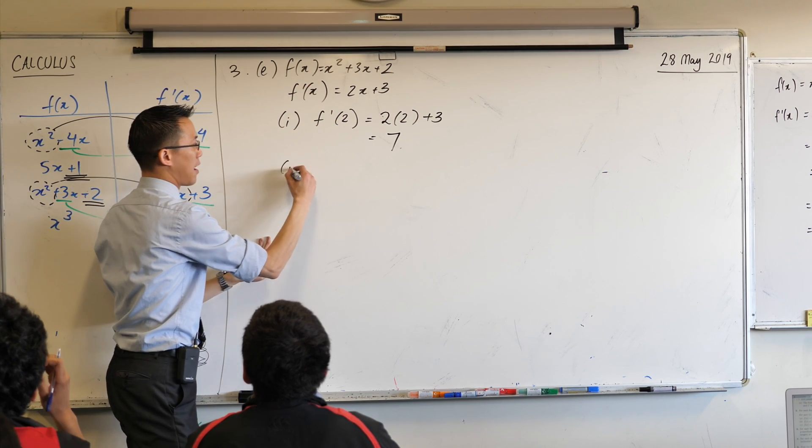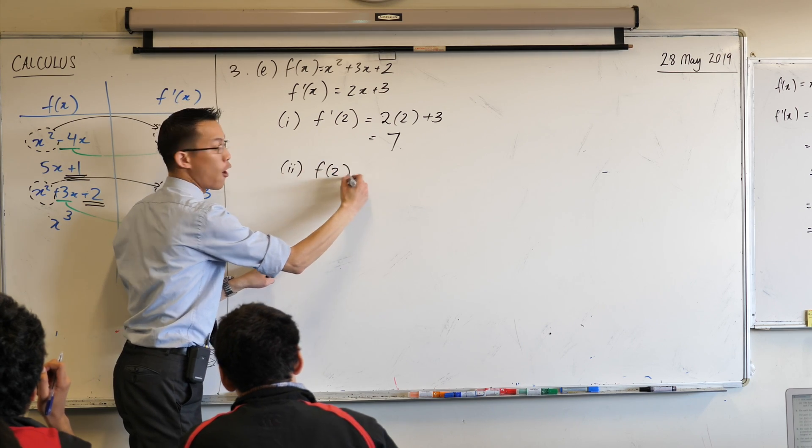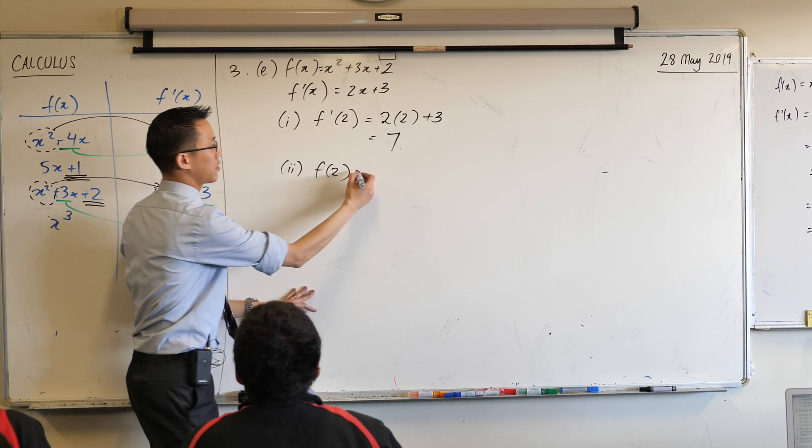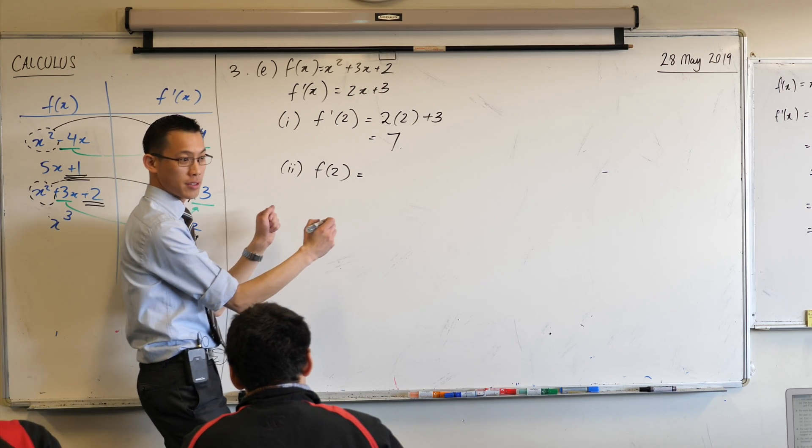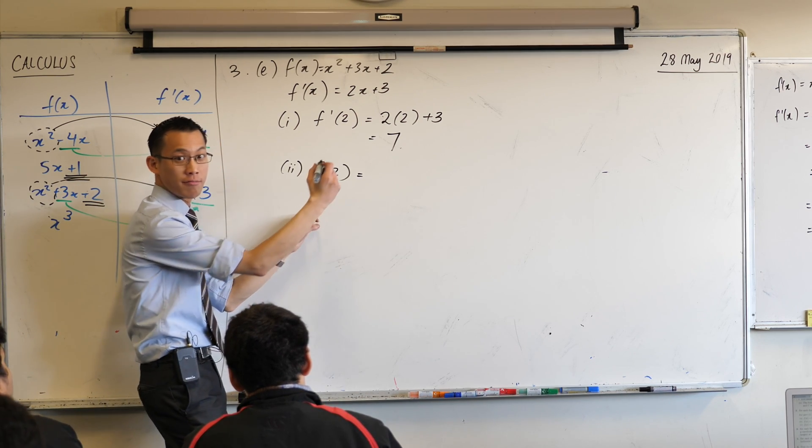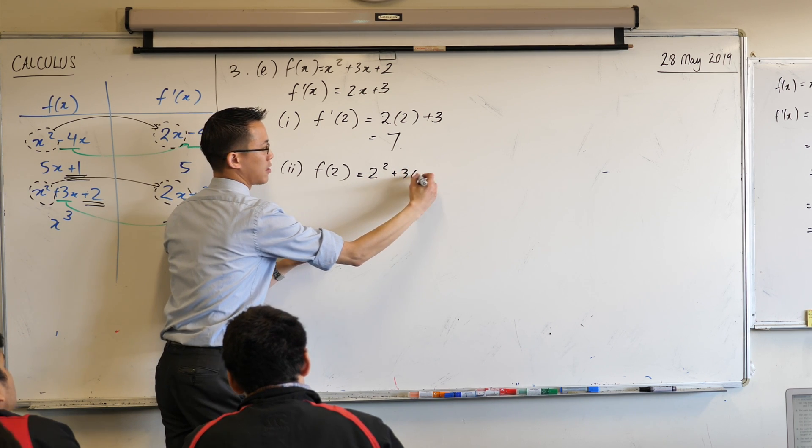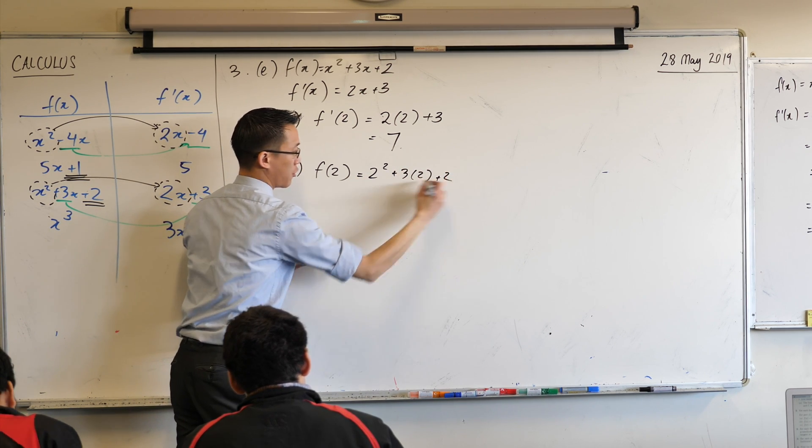Find the y-coordinate on this guy where x equals 2. In other words, part 2 is asking for f of 2. Does that make sense? y equals f of 2. So let's have a look. Can you help me do the substitution? What am I going to write first? Don't tell me the answer. Tell me the substitution. 2 squared plus 3 times 2. 3 lots of 2 plus 2. Very good.